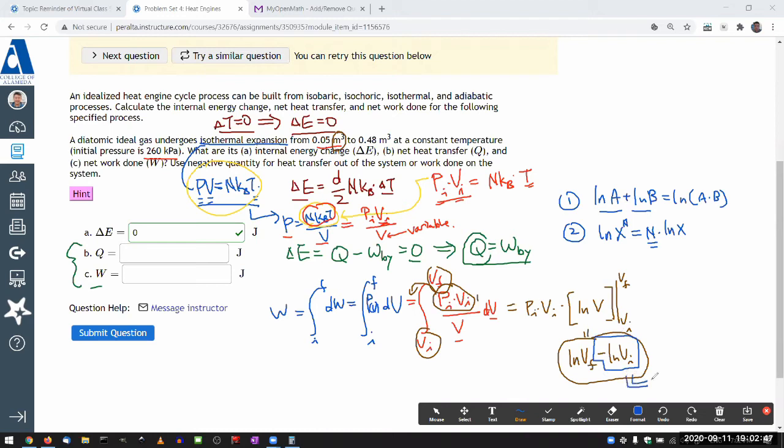So one way to kind of rewrite this is to say that is a natural log of Vi raised to power minus one. And then I have natural log of V final plus this. So applying this rule, I'm going to get everything together, natural log of V final times Vi raised to power of minus one.